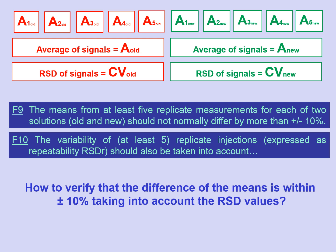With this data, we can calculate the mean values of the responses obtained for each standard — A-old and A-new — and the corresponding values of the coefficients of variation, CV-old and CV-new, and check whether or not they meet the criteria established in points F9 and F10 of the SANTE document. But how can we verify that the relative difference of the mean values is less than 10%, taking into account the values of the coefficients of variation?